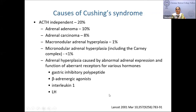Among ACTH-independent causes, aberrant receptor expression on adrenals can give rise to aberrant receptor-mediated Cushing's due to macronodular adrenal hyperplasia. Examples include GIP, which leads to food-dependent Cushing's, beta-adrenergic agonist, interleukin, and LH, which causes pregnancy-dependent Cushing's.